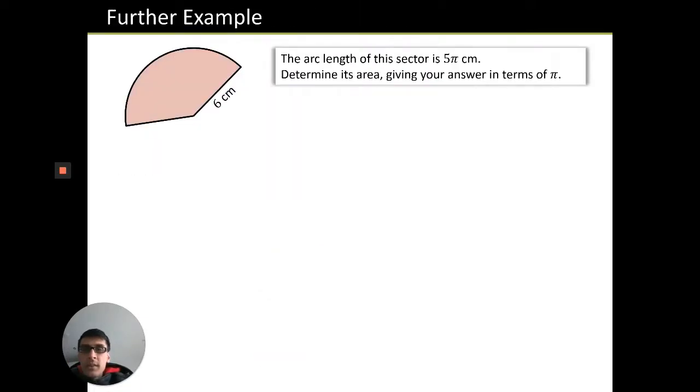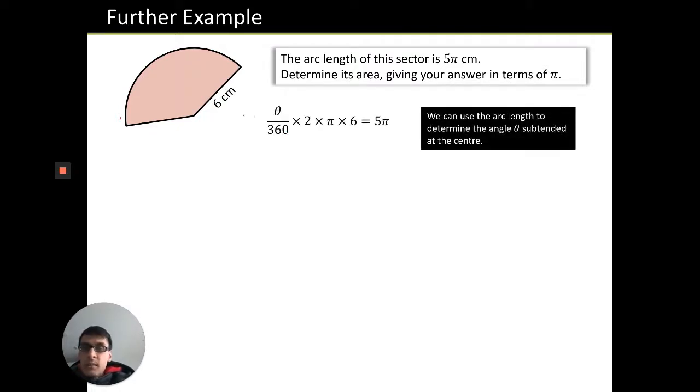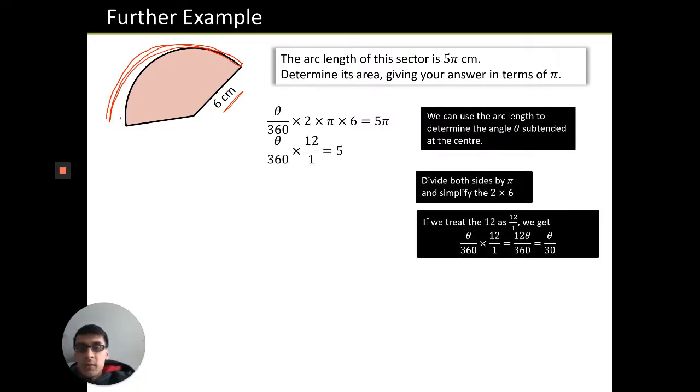Another type of example here: the arc length. This time you've been given the arc length and you've been told it's 5π. Determine its area. In this case, theta over 360 times 2πr, where r is 6, will give you the arc length which is 5π. Then you rearrange. You can write 2 times 6 as 12, or as 12 over 1 to make it easier to process. You can cancel 12 and 360 because they go into each other, and then you get theta equals 150.